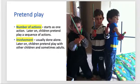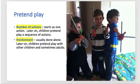Regarding the number of actions, pretend play starts off as just one action or very few actions repeated over and over — like I wake up, I go to school, I come home, I go to sleep, repeating the same sequence. It could even be I'm the baby: wah wah, give me a bottle, go back to sleep, wake up, wah wah. Then later on they start having a sequence of actions where it gets more elaborate — step one, step two, step three — building on it, which is definitely more complex than when they were younger.